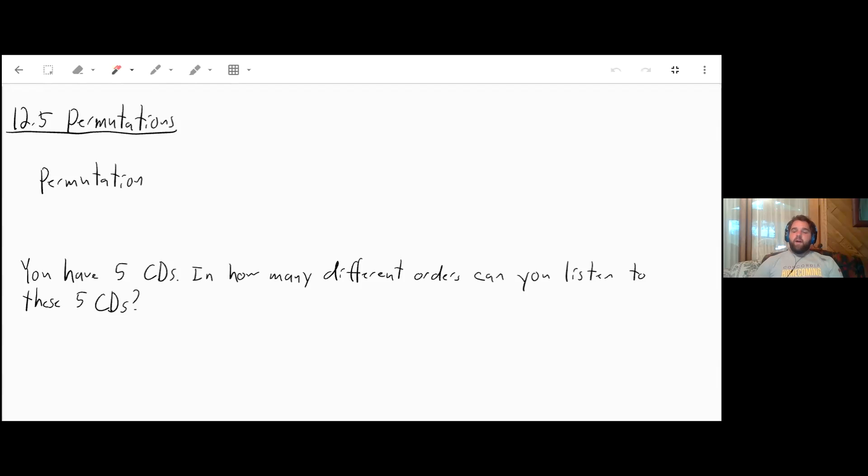Welcome to 12.5 on permutations. Permutations are just a fancy way of counting how many ways things can happen when the order matters.